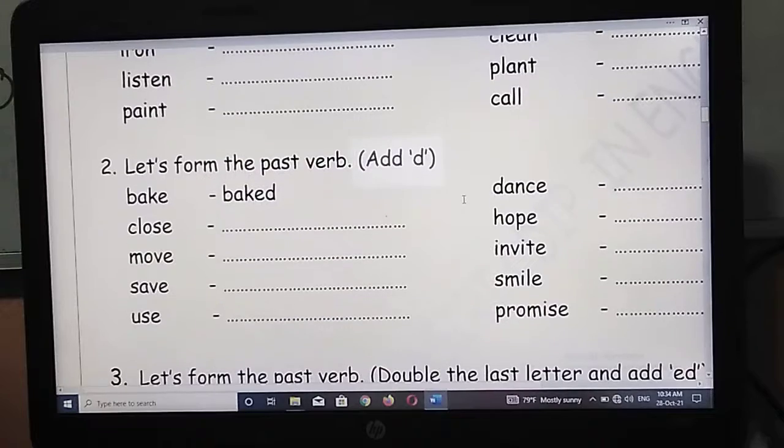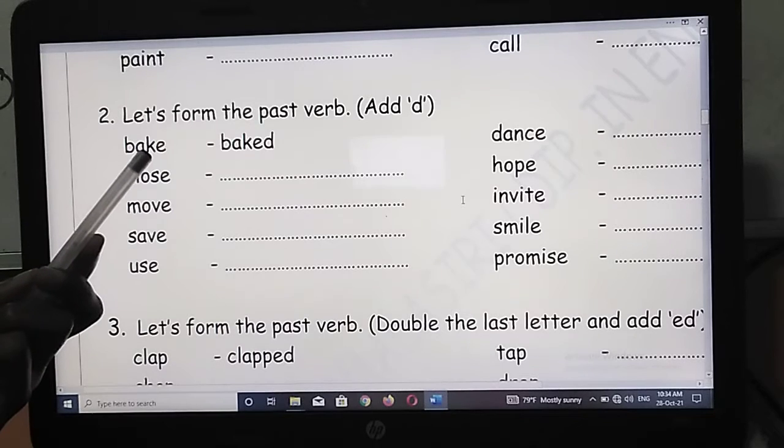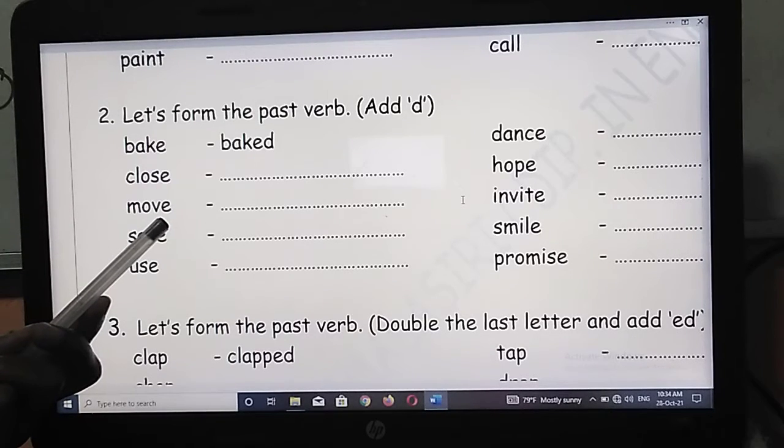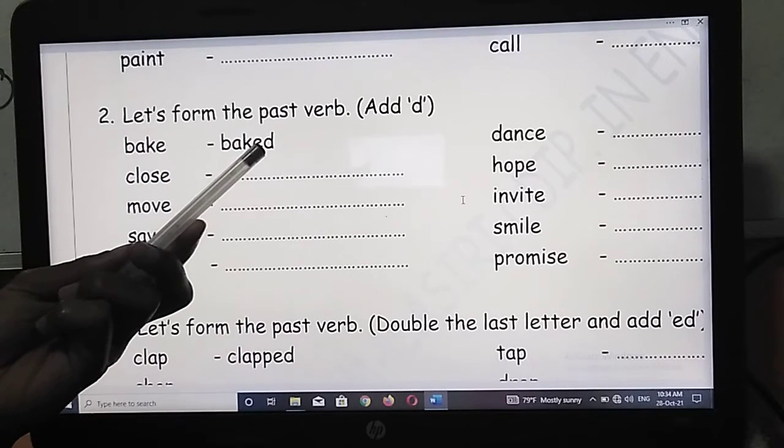Then let's go to the second method. There are some words, some regular past verbs. They end with E. At the end of the word, there is E. So we should not add E again. We should add only D.